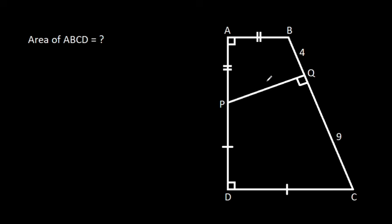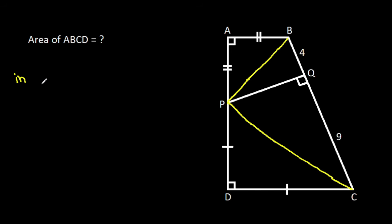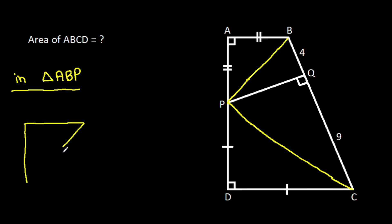If we join BP and CP, then in triangle ABP, the angle at B is 90 degrees and AB is equal to AP. That means these two base angles will be equal, so each is 45 degrees.